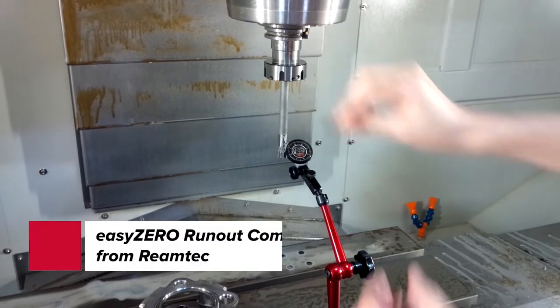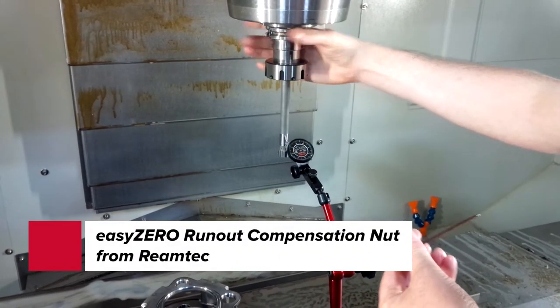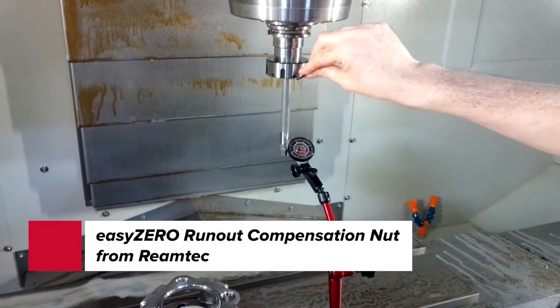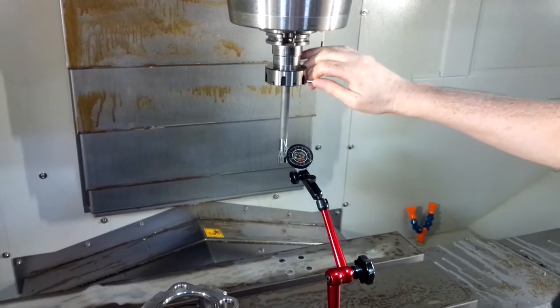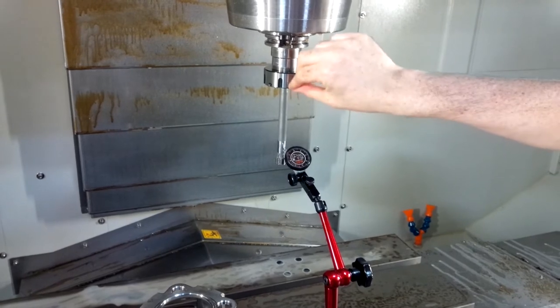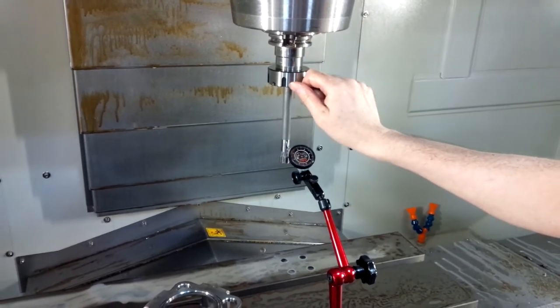Find the high spot and find the screw closest to it and begin to tighten it down, with the goal being to tighten it down by half of the indicator reading. Sometimes you may need to tighten down more than one if the indicator is in between two screws.